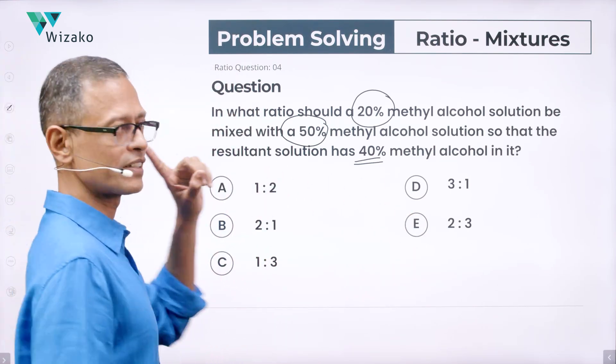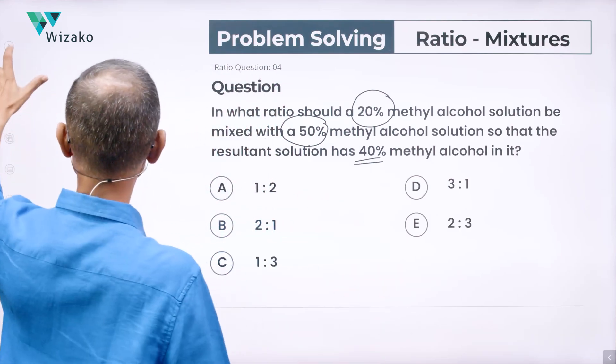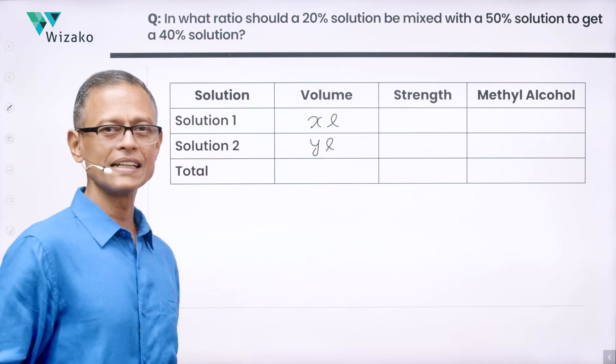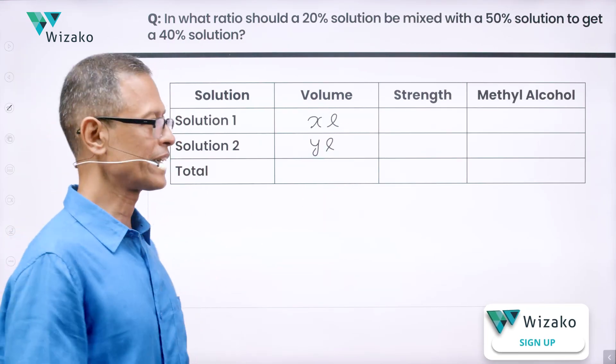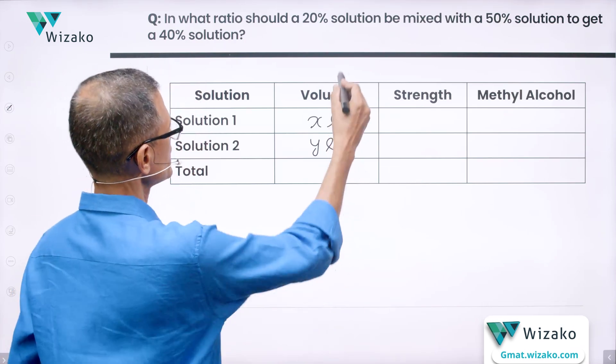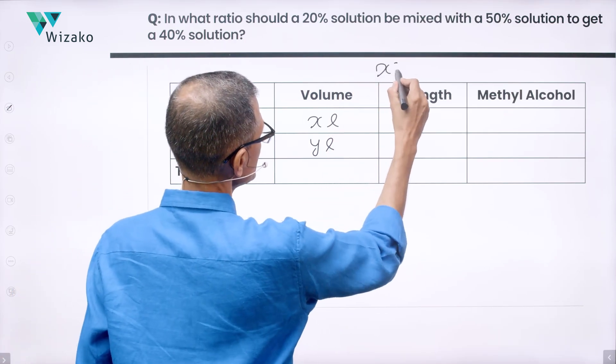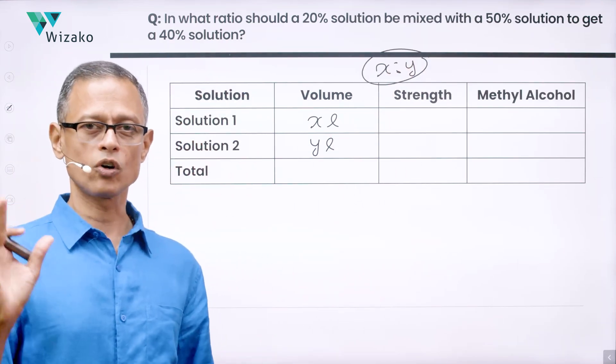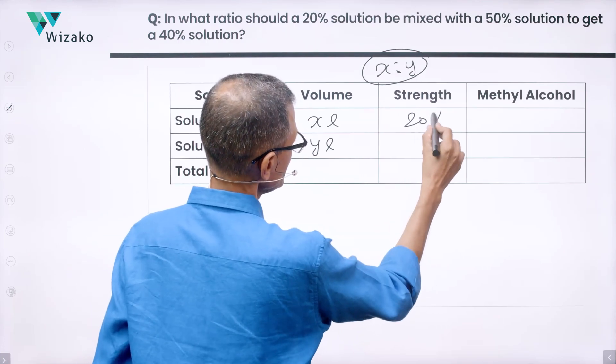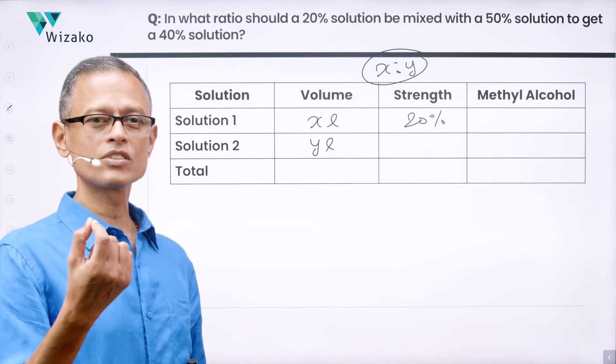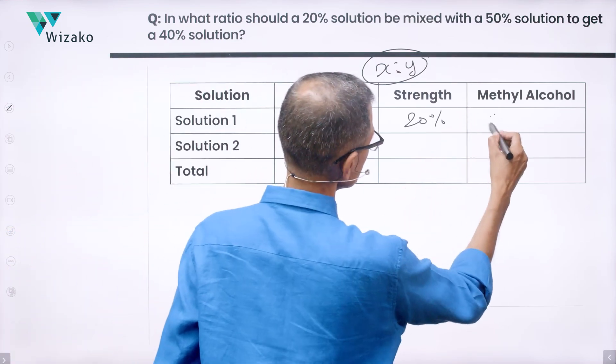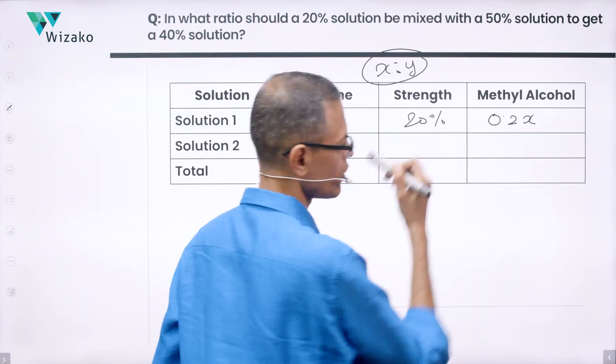Quickly run through using the first method which is a typical weighted average method. I'm going to assign a few variables. Solution 1 will be x liters in volume, Solution 2 y liters in volume. So essentially what we are trying to find out is if this is 11 liters and this is 19 liters, we are mixing them in the ratio of 11 is to 19. So we're trying to find out what is x is to y. That is what our final answer is going to be. Now the strength of the first solution is 20%. So 20% of x liters, which if I write it in terms of decimal, will be 0.2. 20 upon 100, which is 0.2x is the volume of methyl alcohol in the first mixture.